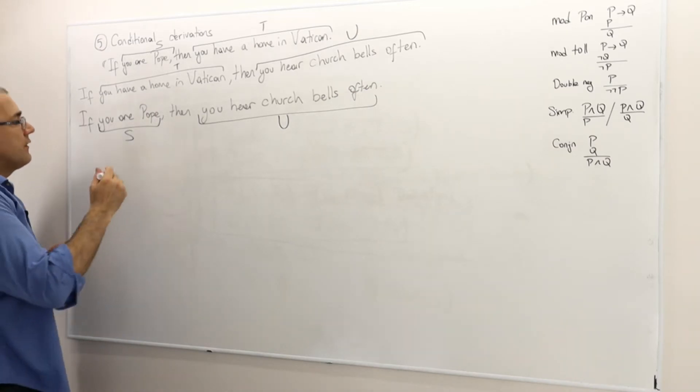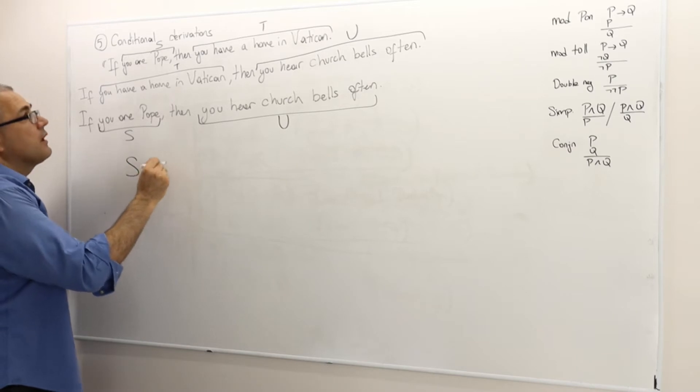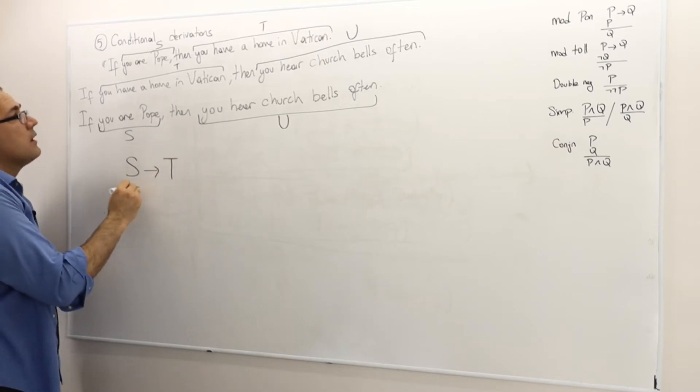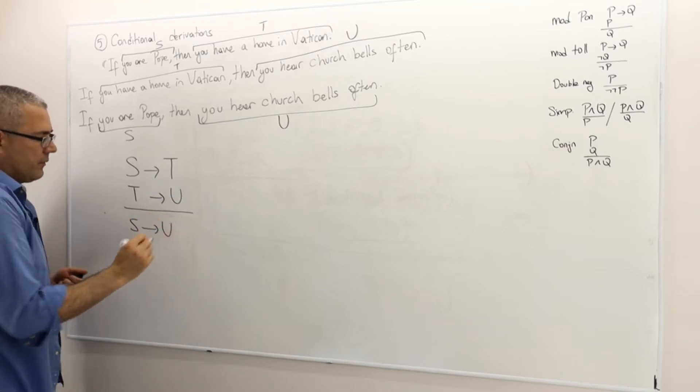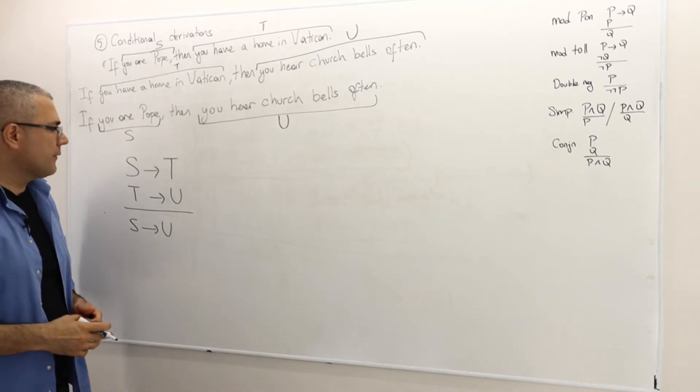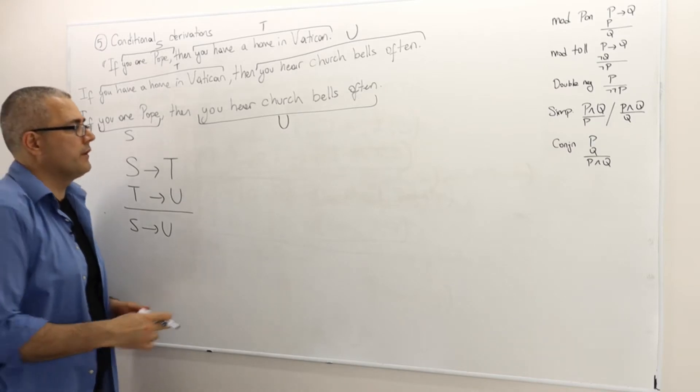This argument can be written as S implies T, T implies U, therefore S implies U. Is this a valid argument? How do we prove this?